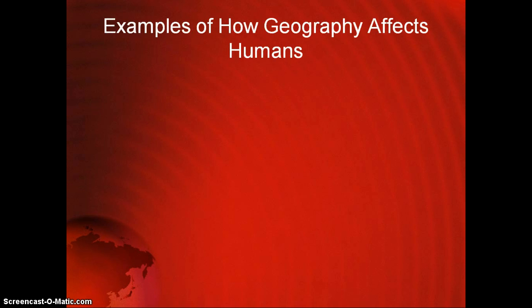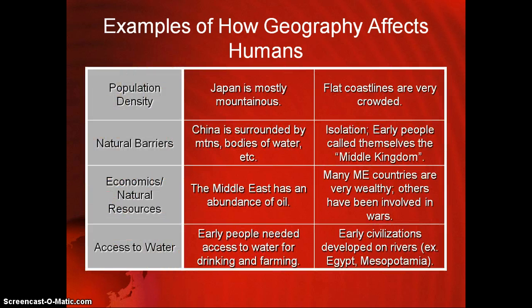In terms of geography and how it affects humans, there are many different ways. One example is population density — how many people are in a particular area. For example, Japan is mostly mountainous, so most people are crowded into the flat coastal areas. I'll let you read through the others. Can you think of any others?